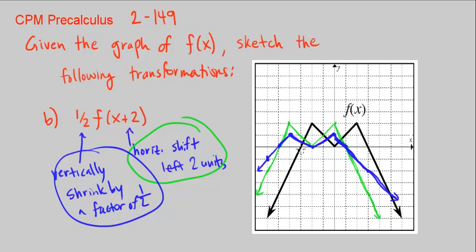I'm going to erase this graph and this graph because our answer is just in blue there. So there's our answer in blue. It's not f of x, it's over here. It's one-half f of x plus 2, and it went through two transformations. And there is the graph. That ends CPM Precalculus Chapter 2, Number 149.